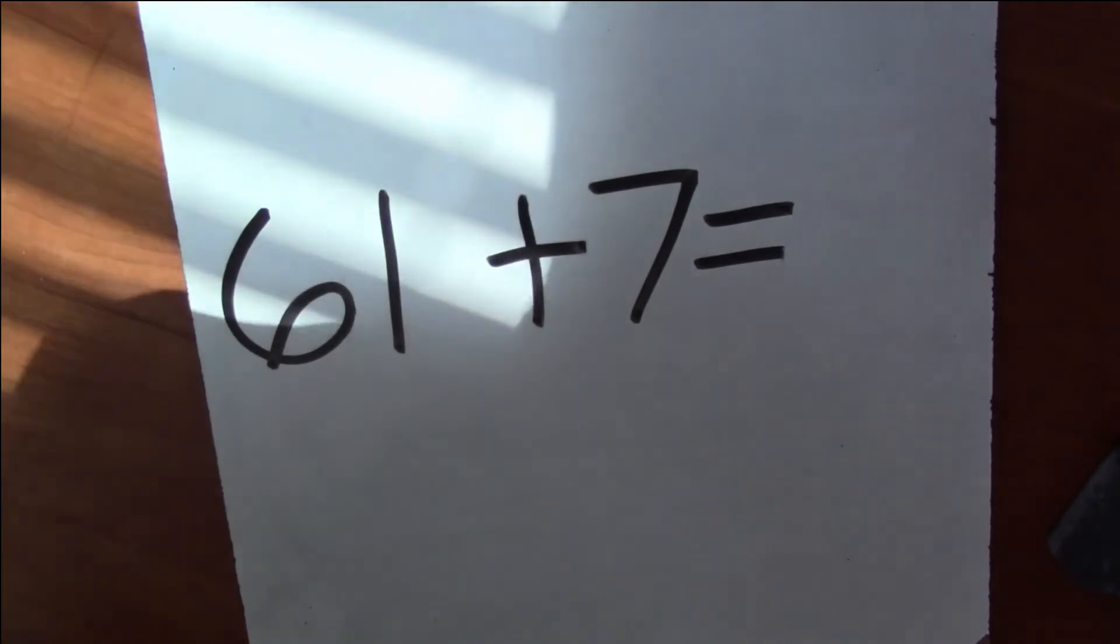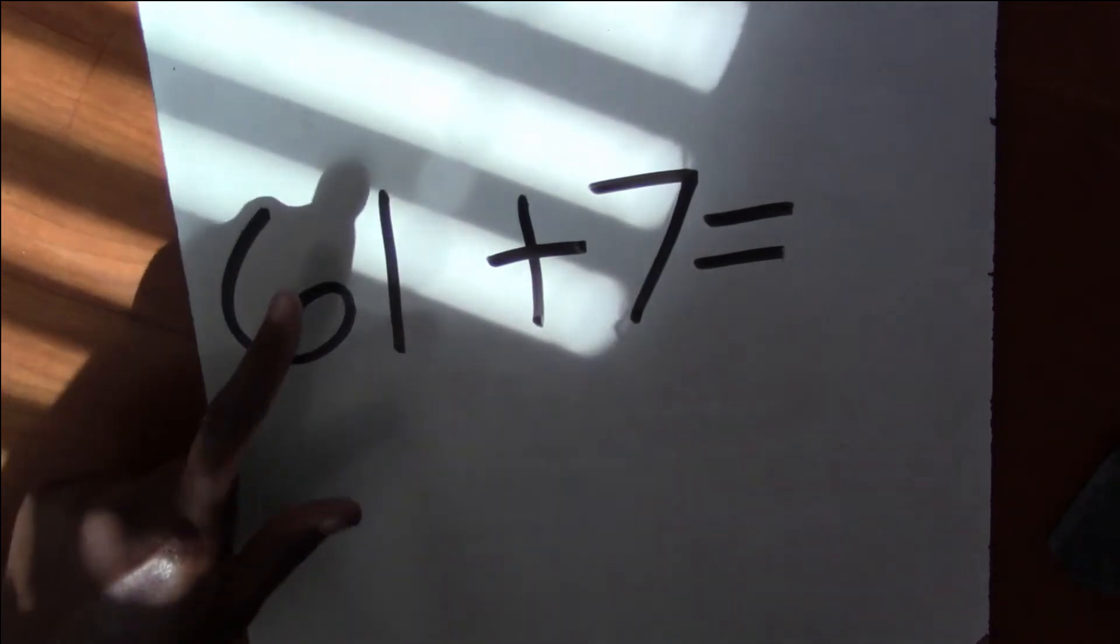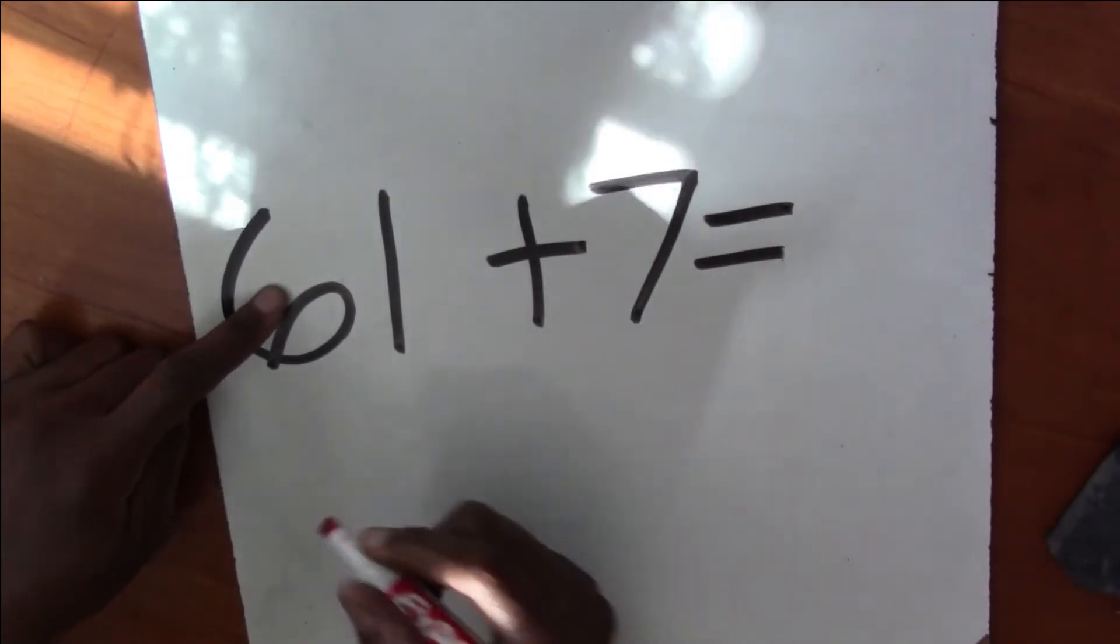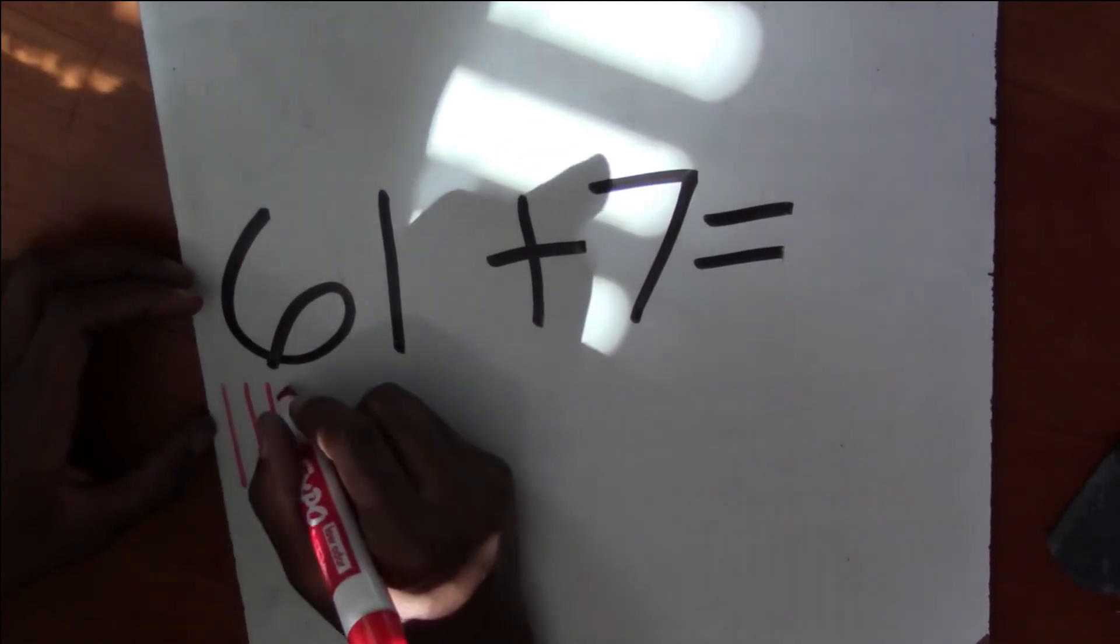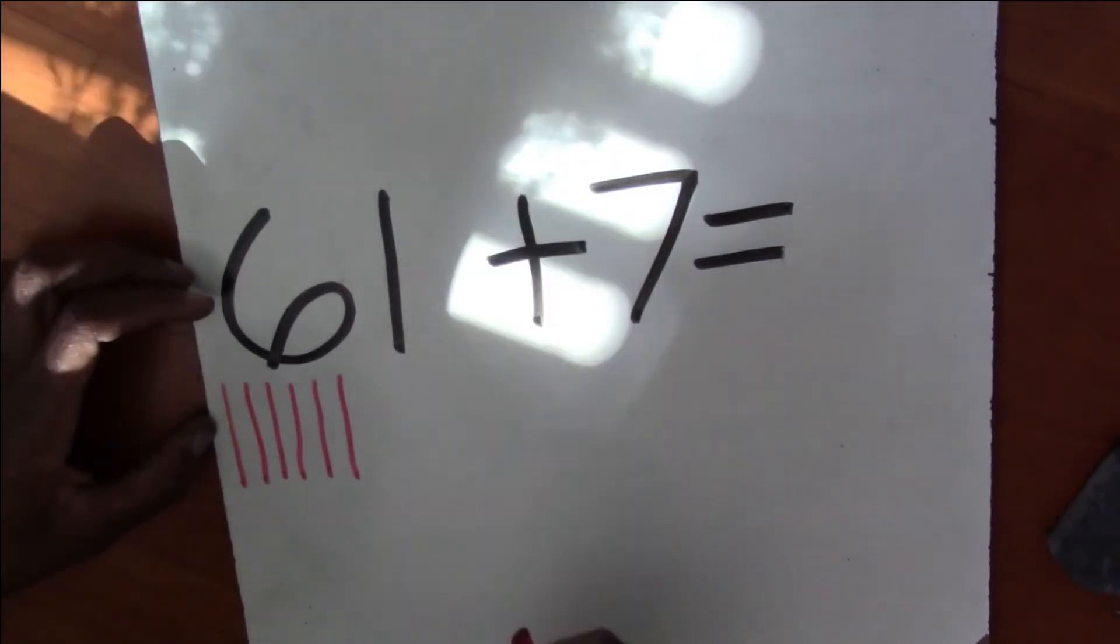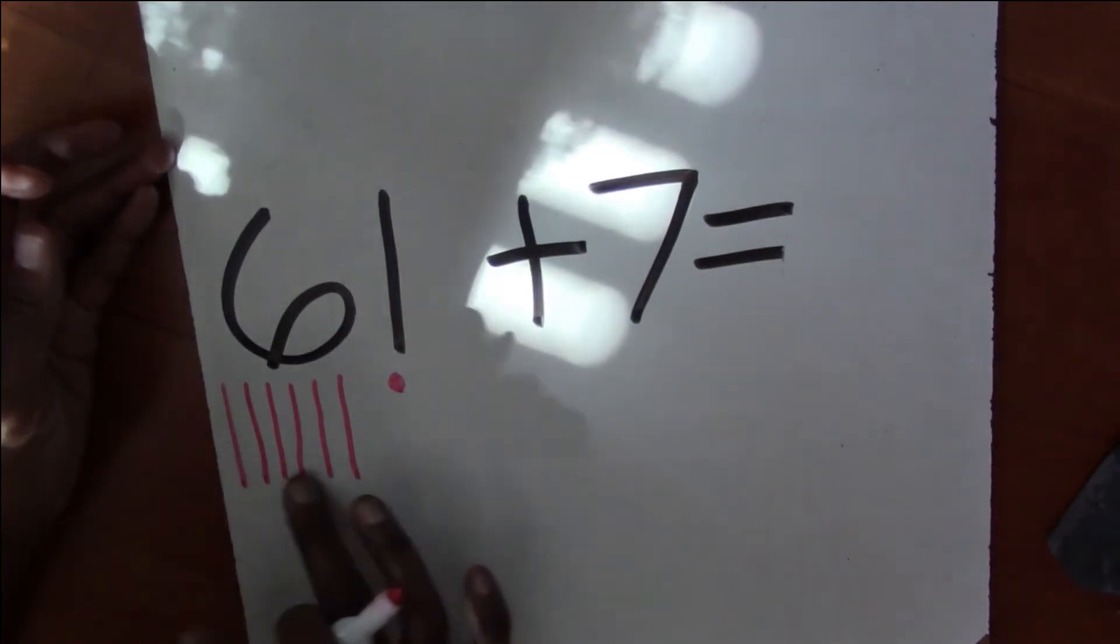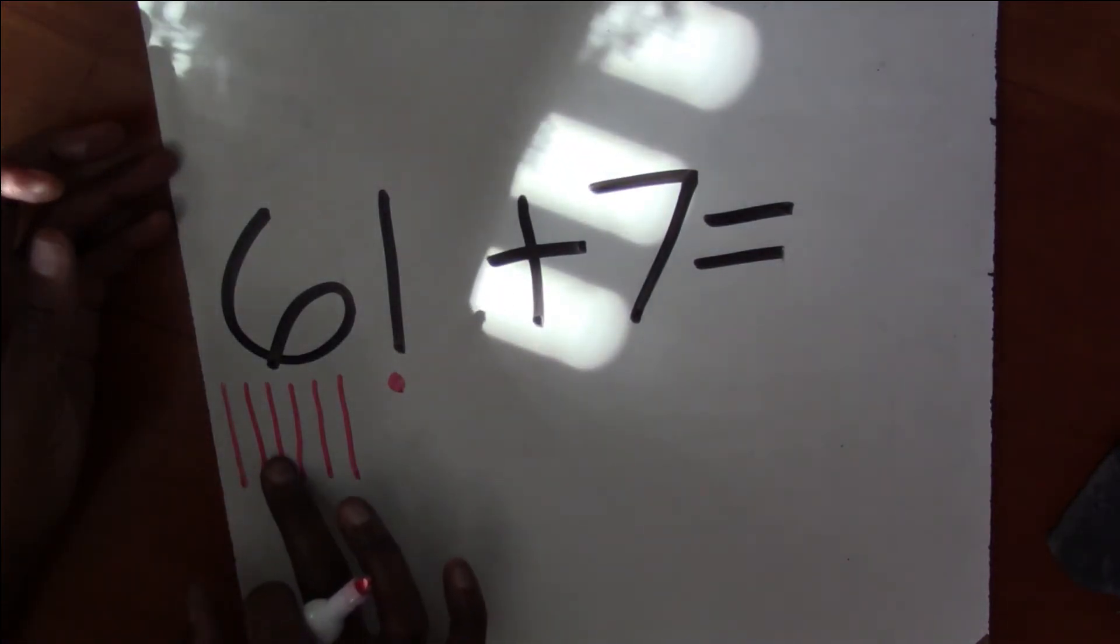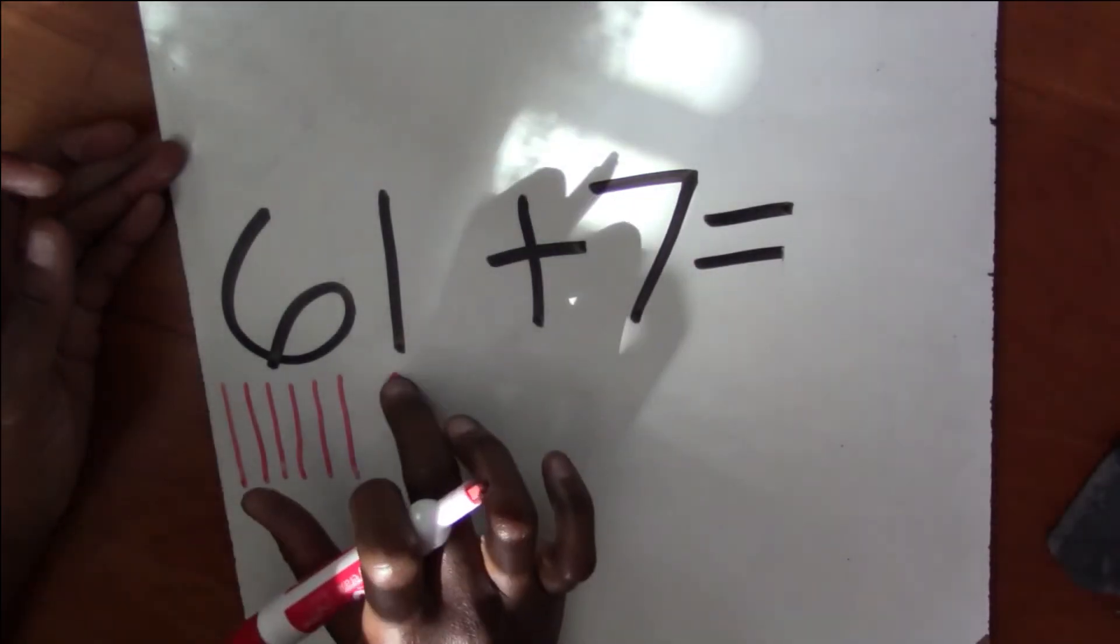Are you ready to check your answer with me? Okay. So I'm going to draw 61 and 10 sticks. So I need six 10s. 10, 20, 30, 40, 50, 60. And I need 1. So this should be 61. 10, 20, 30, 40, 50, 60, 61.